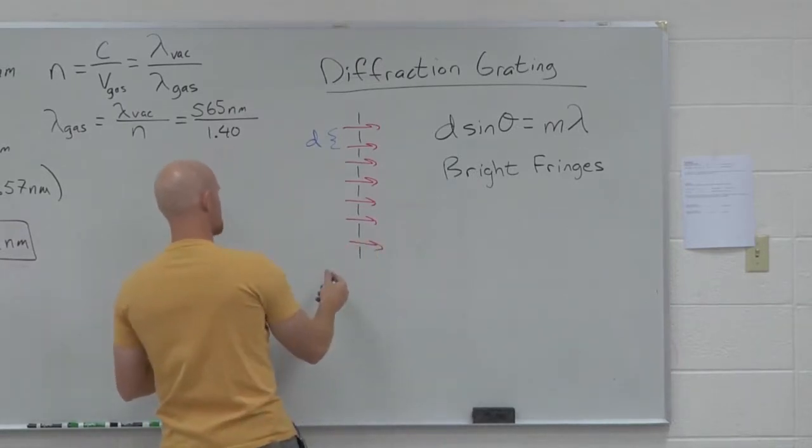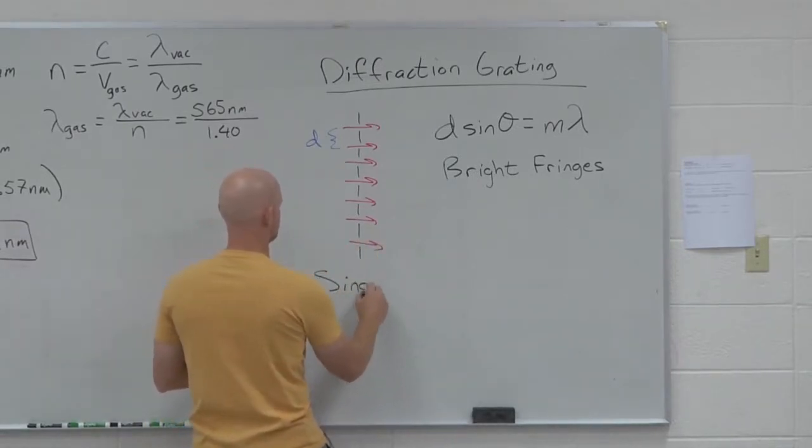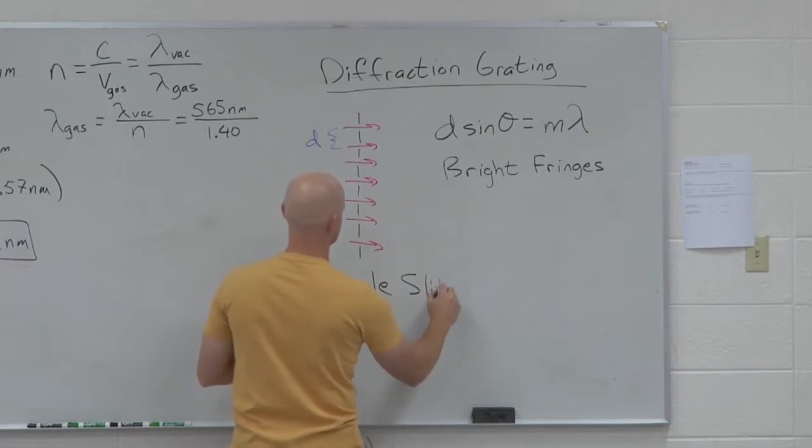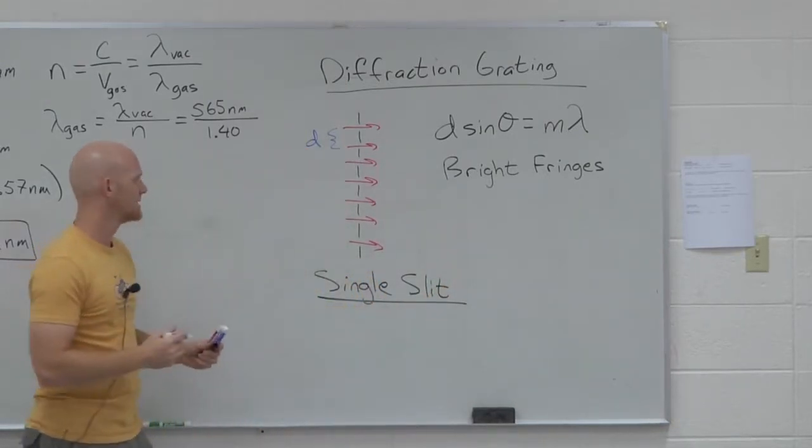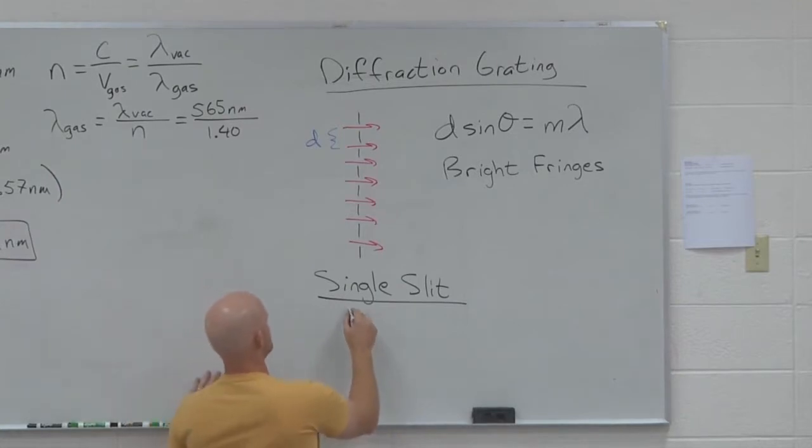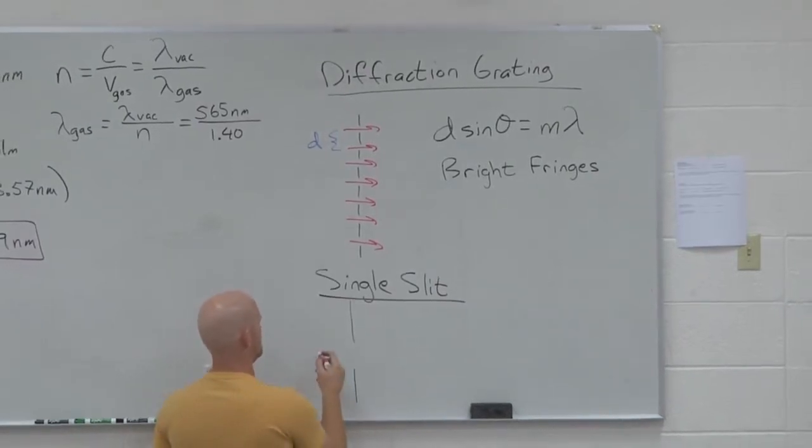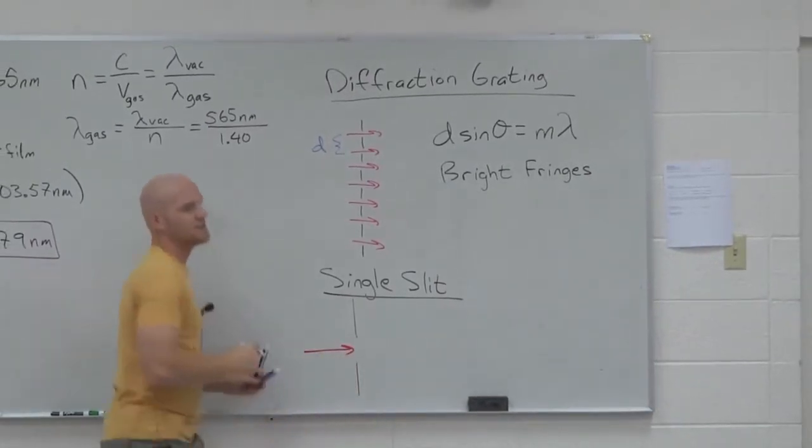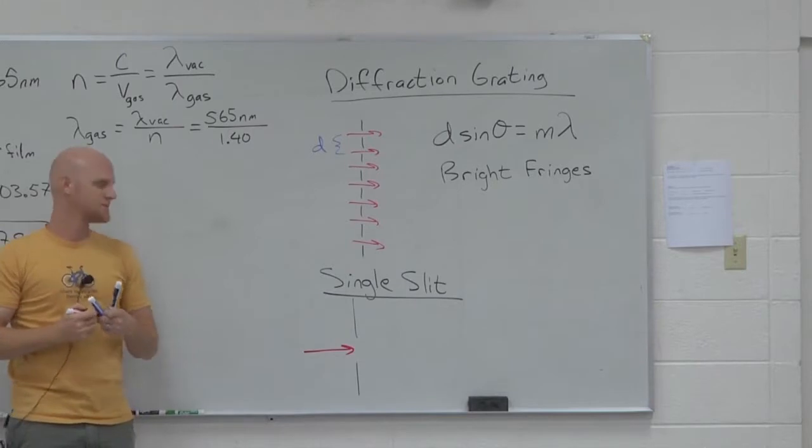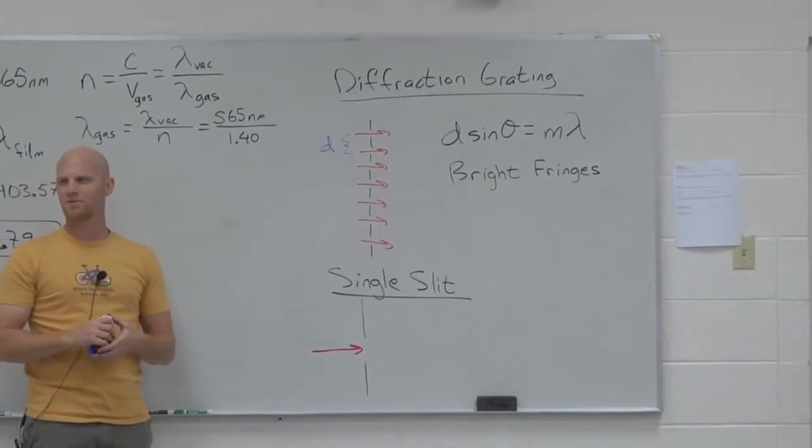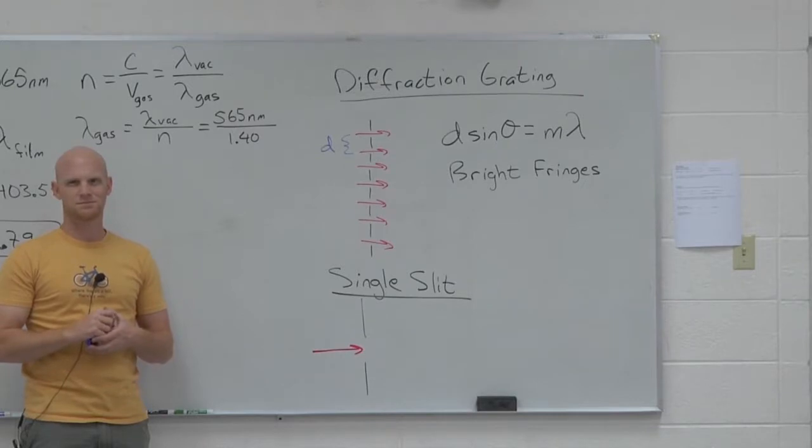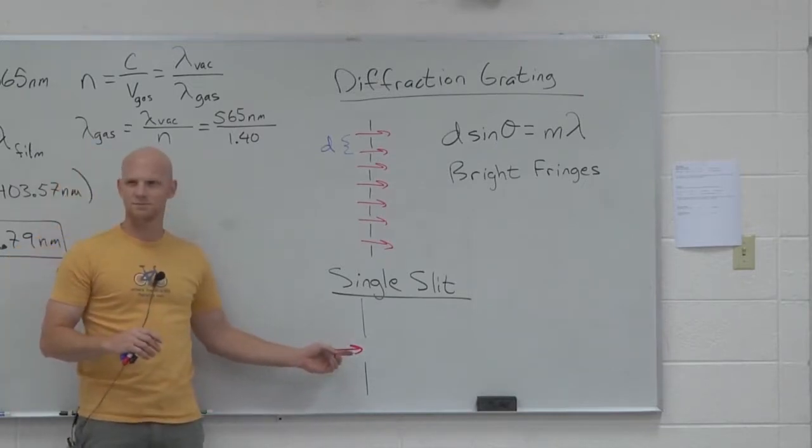The other context you might see this is your single slit experiment. This is a little bit funky. If I have a single slit then how many different places can light pass through this surface? One. Unfortunately we still see an interference pattern, even with only one slit. Why?